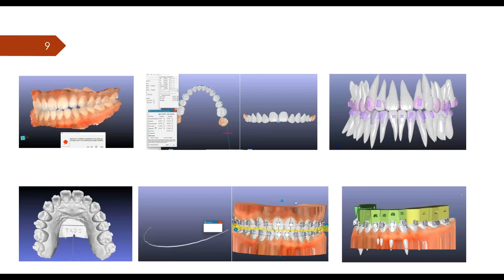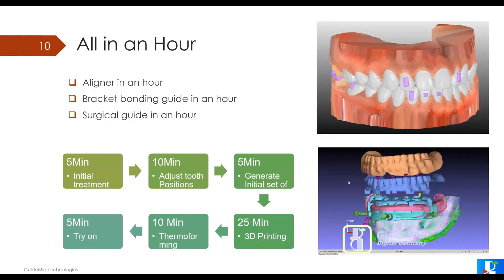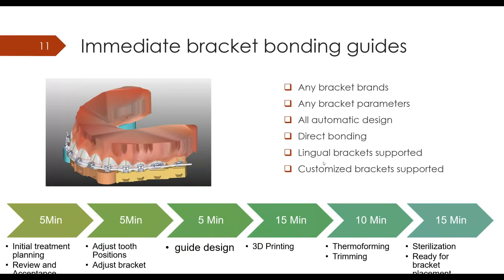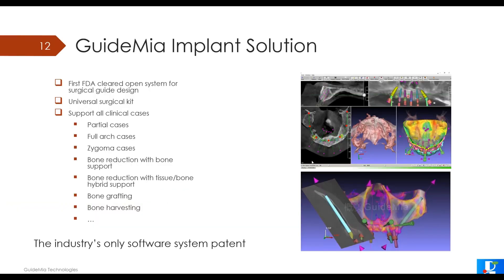We also have a bracket bonding approach — a direct bonding approach where we generate a guide to put on the patient's mouth. You don't need to do any extra work except printing. With our latest software, we can help labs and clinics perform treatment planning and design models for aligner manufacturing within an hour. We can do the same for implant surgical guides — we have all the functions needed for implants. A similar process applies to bracket bonding. We have some slides for implants, but that's not our focus today.